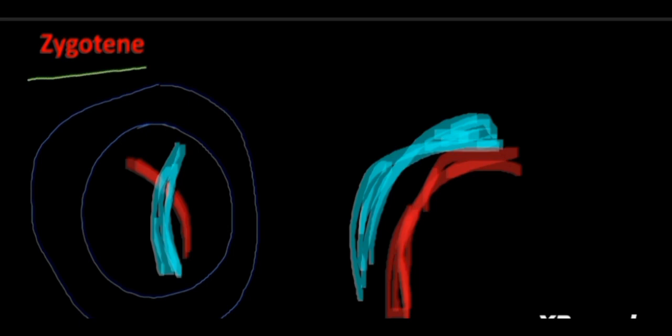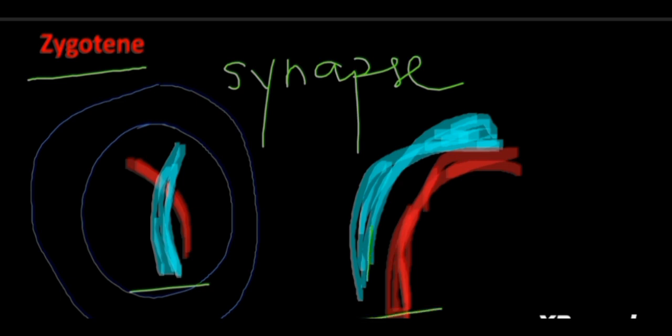In zygotene stage, the homologous chromosomes start pairing up which we call synapse. This synapse forms up and down the chromosome forming numerous points of contact which we call synaptonemal complex.